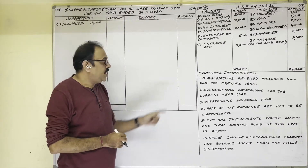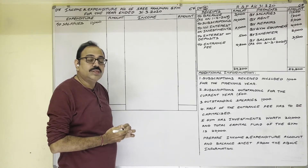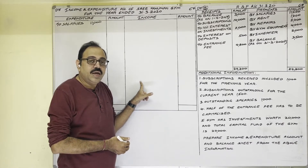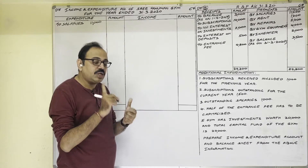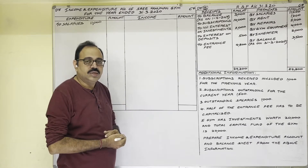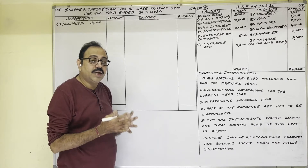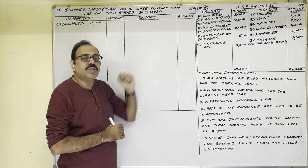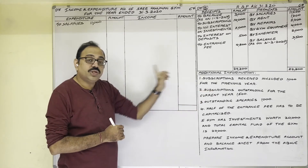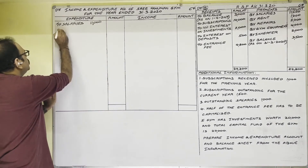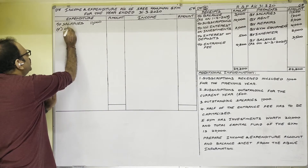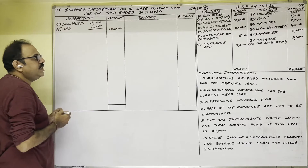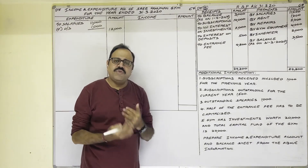Outstanding salary means we still have to pay it. We are preparing the Income and Expenditure Account to know the surplus or deficit. To know the current year surplus or deficit, we must consider both paid expenses and outstanding expenses. So not only paid salary 11,000 but also outstanding salary 1,000 must be considered. Therefore in the inner column add plus outstanding 1,000, making the outer column total 12,000 rupees. Next, rent 1,400 — paid every month, so it is revenue expenditure. No adjustment, so outer column shows 1,400.